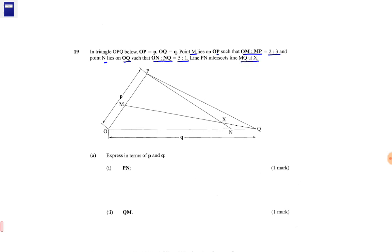So we have the triangle. In part A, we are required to express in terms of vector PN and vector QN. This question is from the topic of vectors 2 which is taught in form 3.